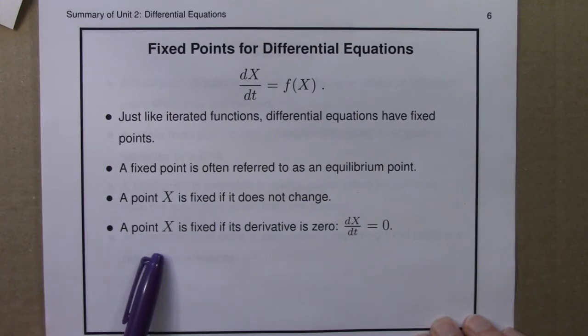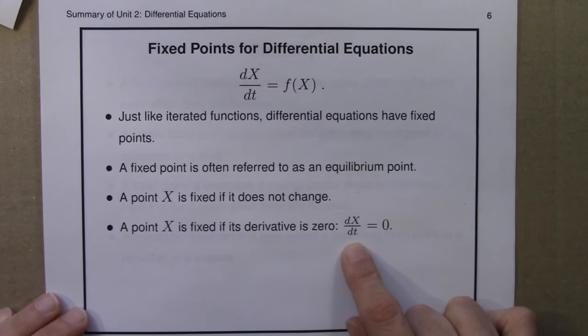A fixed point x is fixed if its derivative is zero. If your derivative is zero, you aren't changing, and if you aren't changing, you're a fixed point.